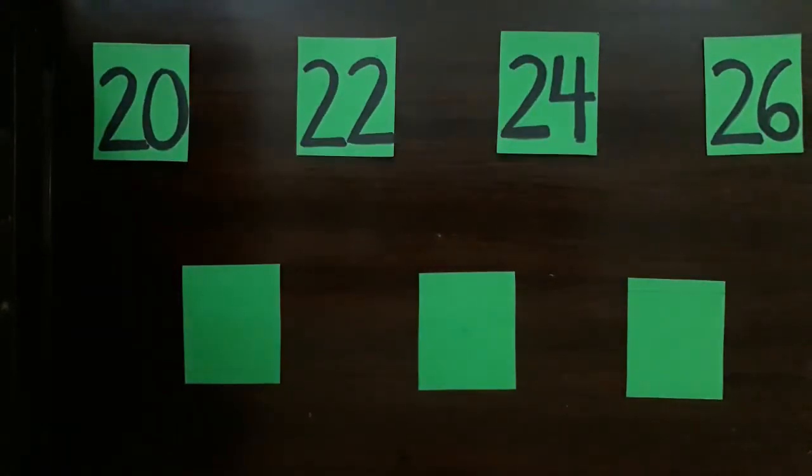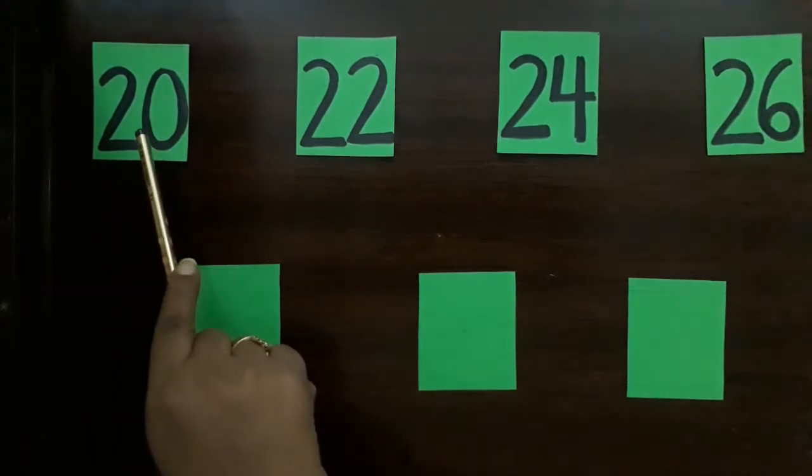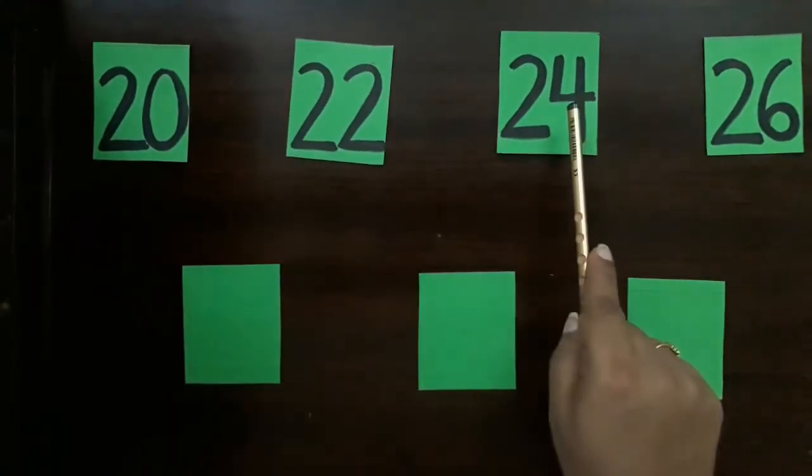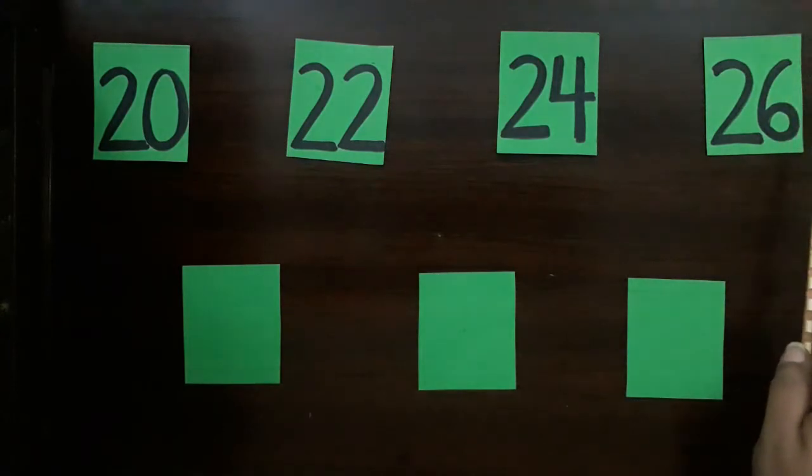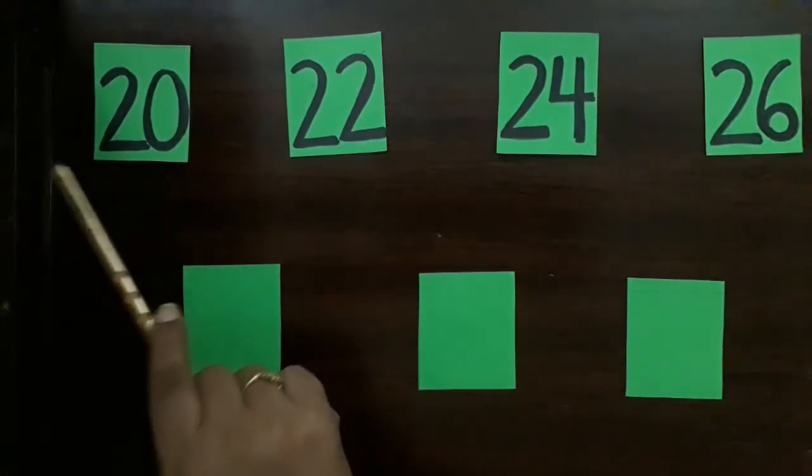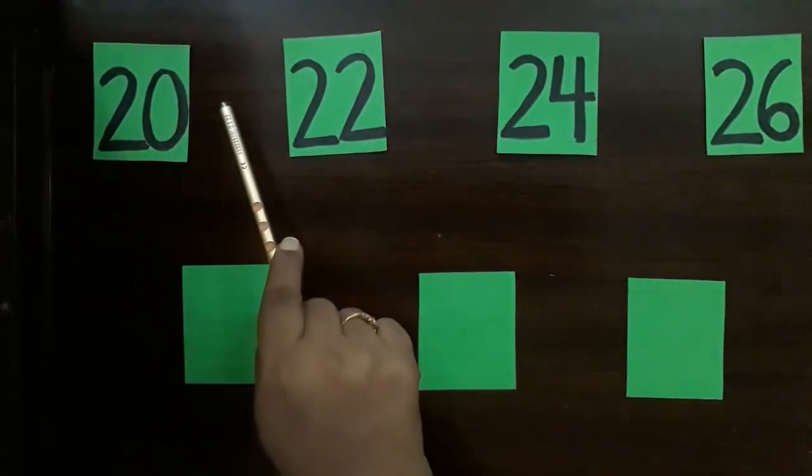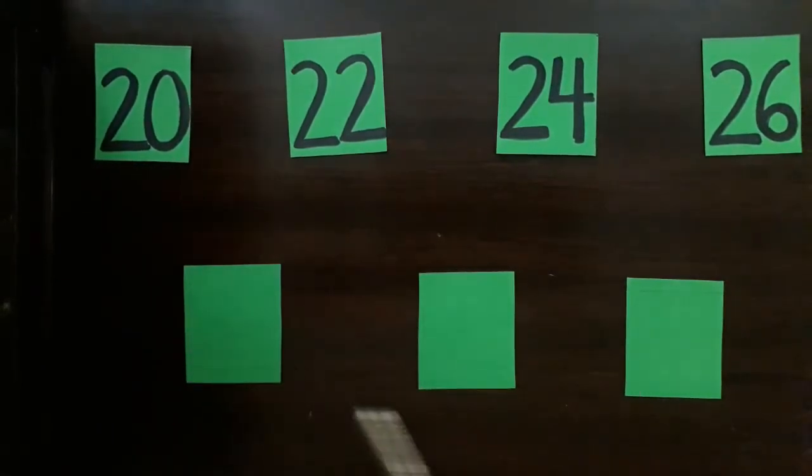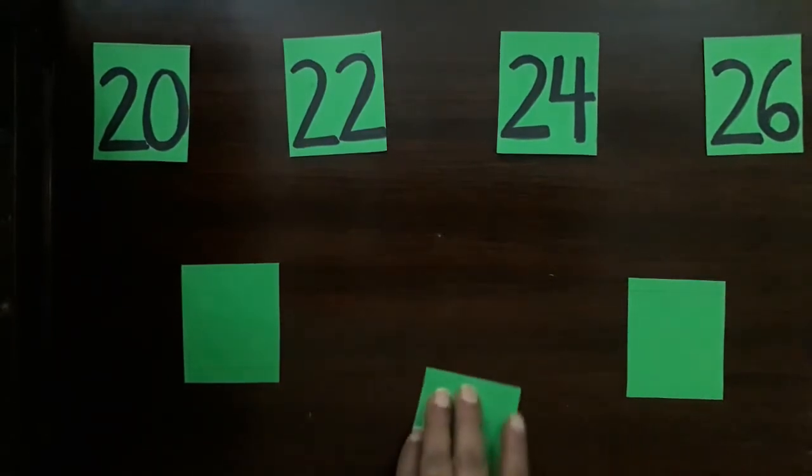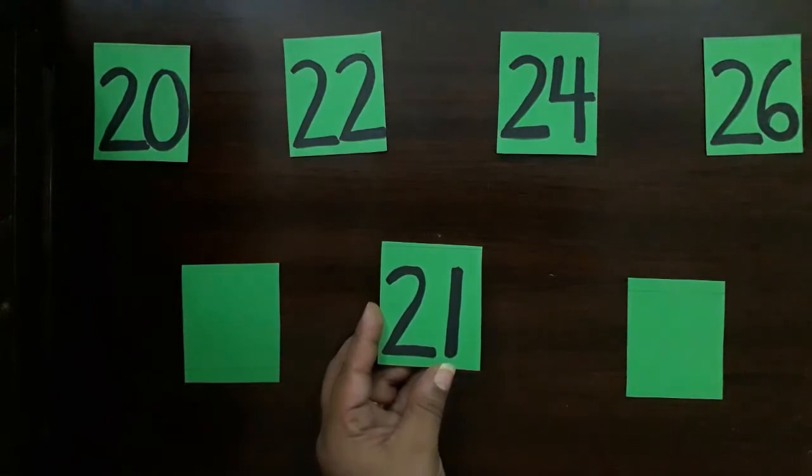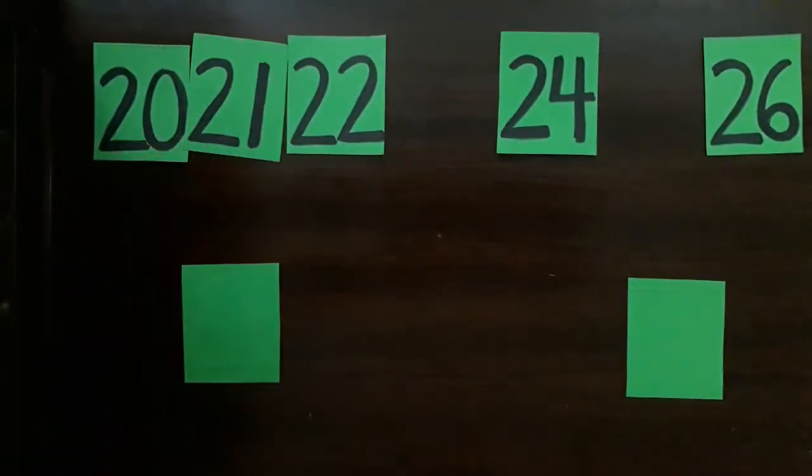Let's play hide and seek with more sets of numbers. I have 20, missing number, 22, missing number, 24, missing number, and 26. Let's start counting from number 20. 20, what comes after 20? 20, 21! So which one is 21?